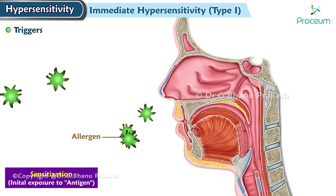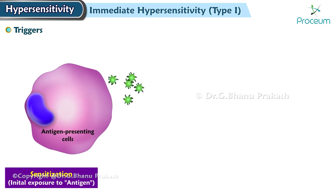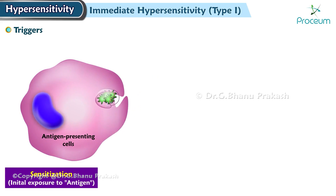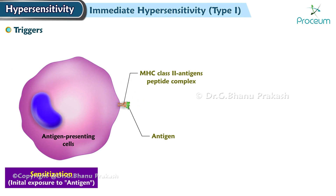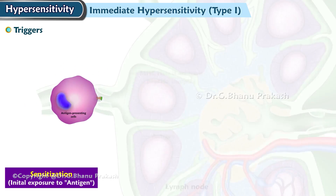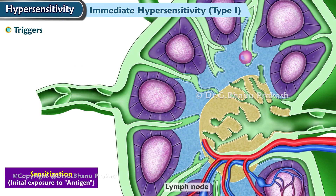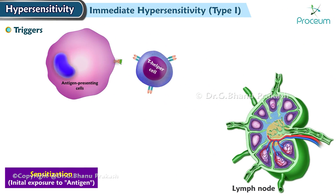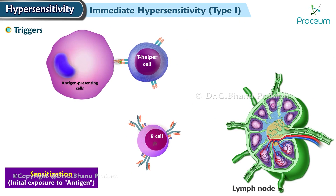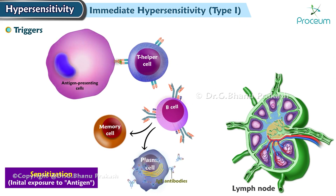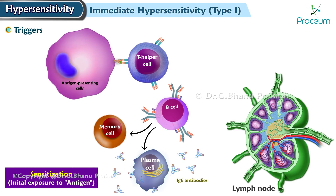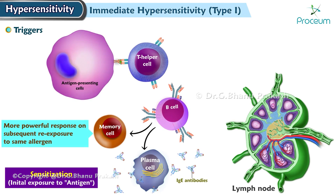When a person with an allergic tendency is first exposed to a particular allergen, antigens are taken up by antigen-presenting cells which process them and display them as peptide MHC2 complex on their surface. These antigen-presenting cells migrate to the lymph node, where cytokines prod compatible B cells to synthesize immunoglobulin E antibodies specific for the allergen. During this initial sensitization period, no symptoms are evoked, but memory cells form that are primed for a more powerful response on subsequent re-exposure to the same allergen.